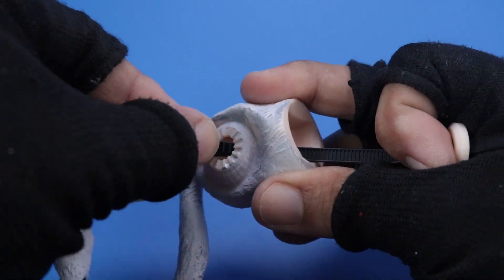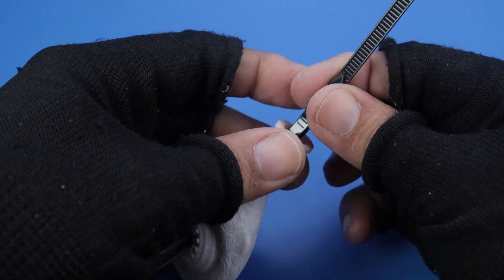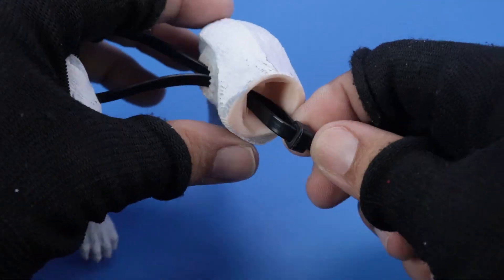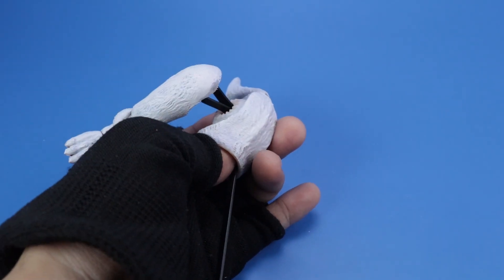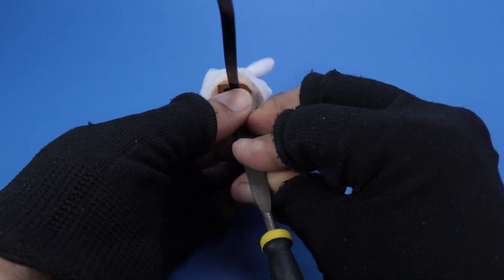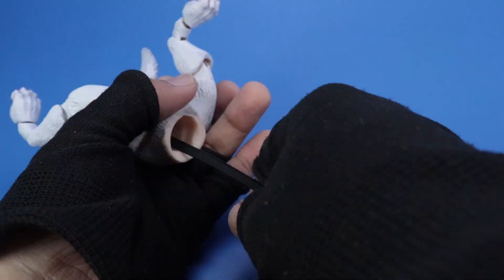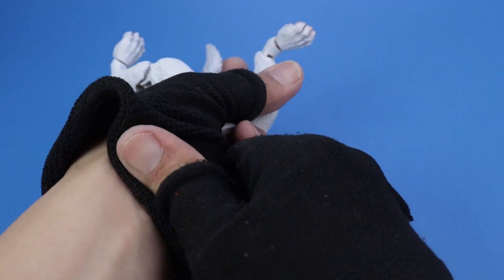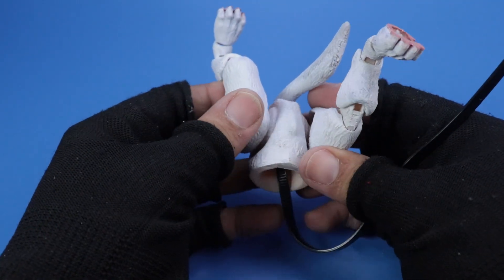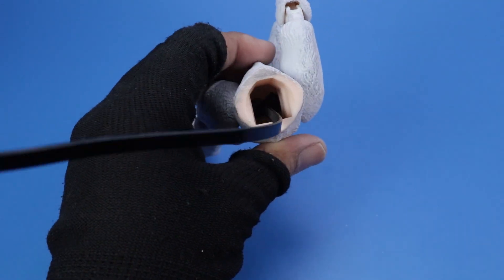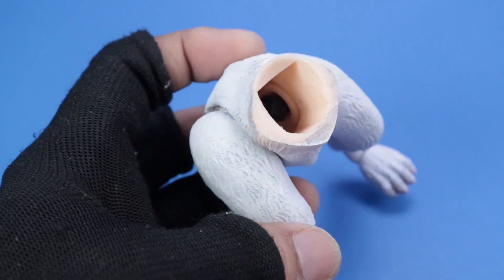Loop the zip tie around the thigh donut, then guide it back into the pelvis and through the spacer. Lock the zip tie, position everything in place, and tighten it carefully. Use a tool, or your finger, to pin down the zip tie head while gently pulling it tight. Once that's secure, repeat the same process for the other leg. Test it out before trimming the excess zip tie, just to make sure the legs can hold their position.